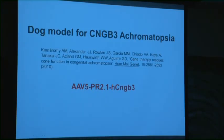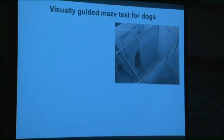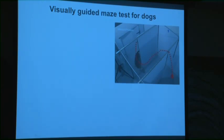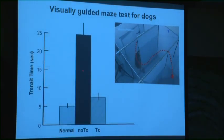The fourth model is a CNGB3 achromatopsia model in dogs — there's also a mouse model. Again serotype 5, PR2.1, and human CNGB3, published about three years ago. This is the maze that Gus Aguirre and Andros Koubarmi constructed. The dog has to find its way through the maze. Untreated eyes, treated eyes, and wild-type are shown — the treatment effect is very profound, nearly back to wild-type behavior with a good p-value.